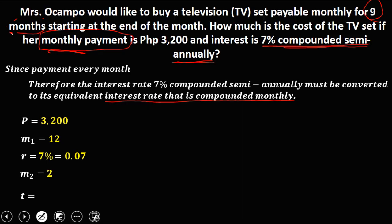Since T is the number of years, we need to convert 9 months to years. So that's 9 divided by 12, which equals 0.75. We need to convert 7% compounded semi-annually to the interest rate that is compounded monthly.